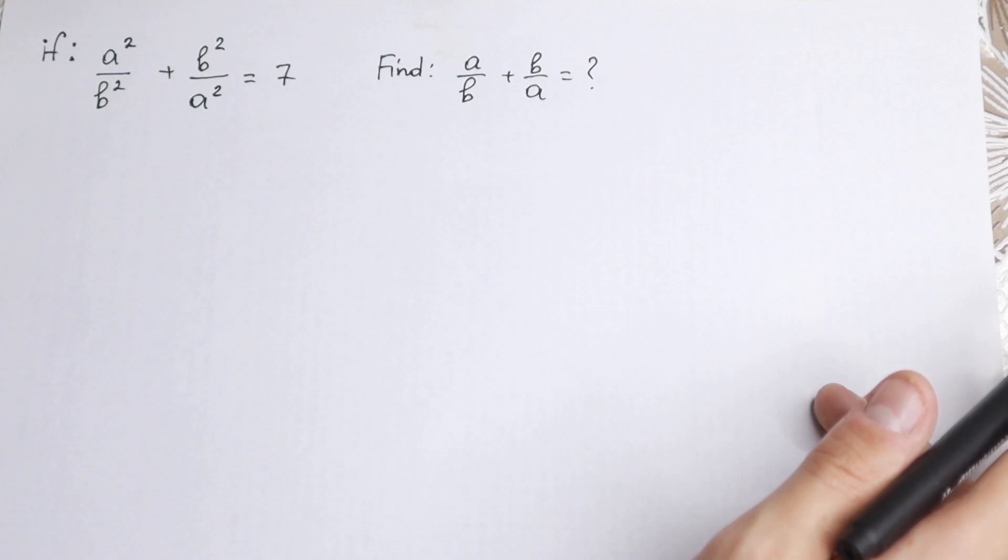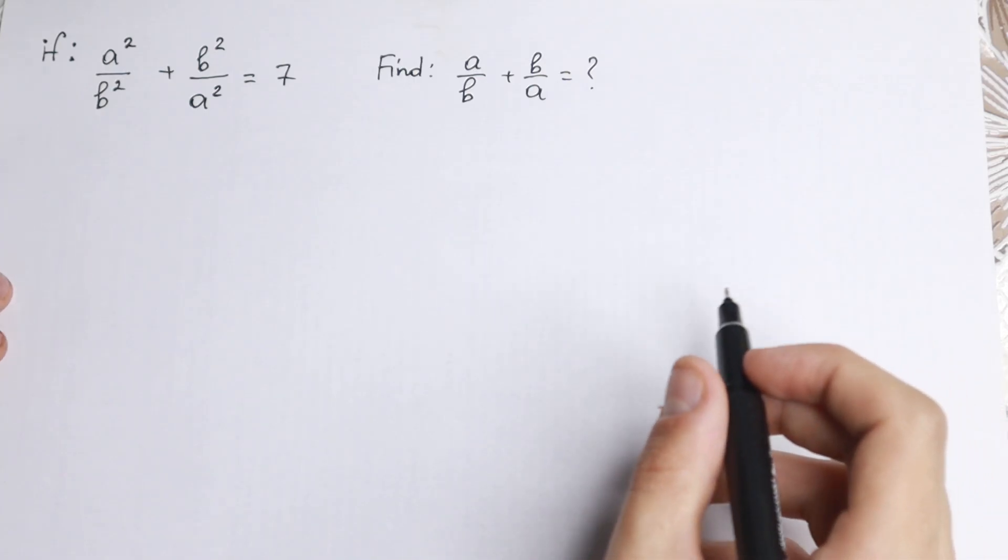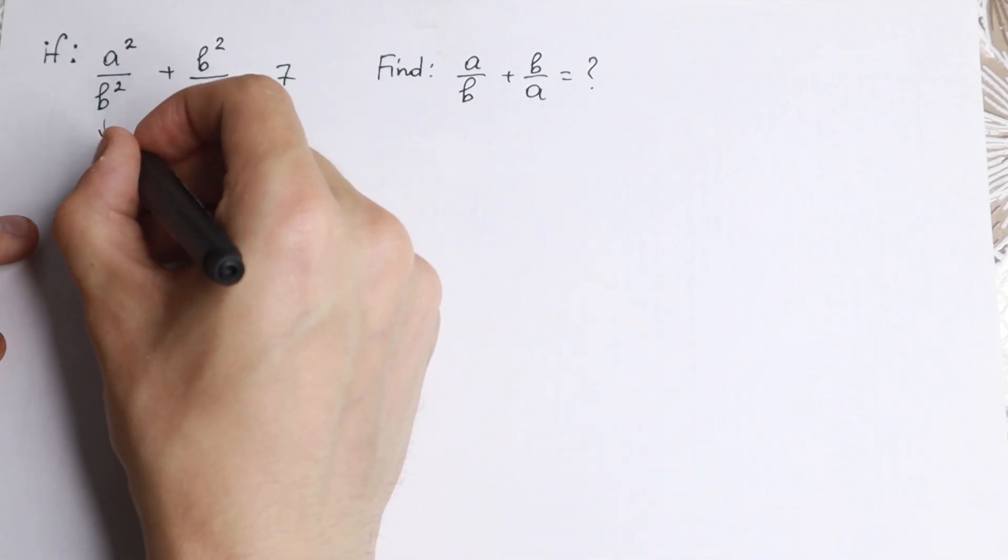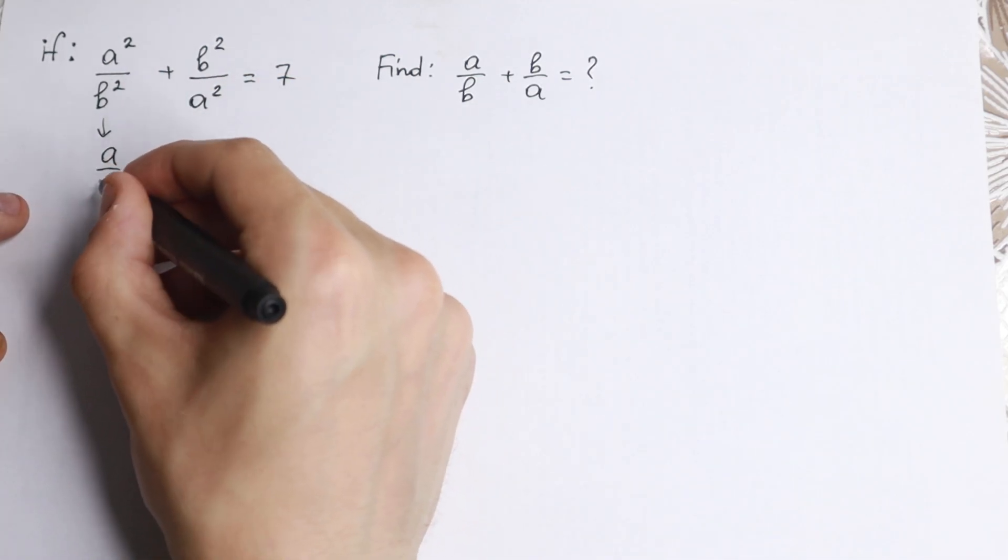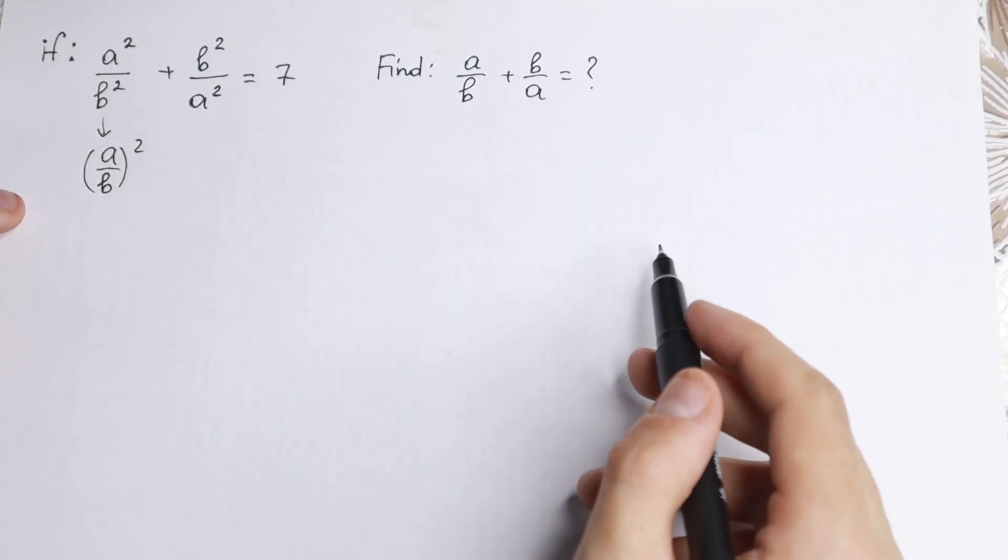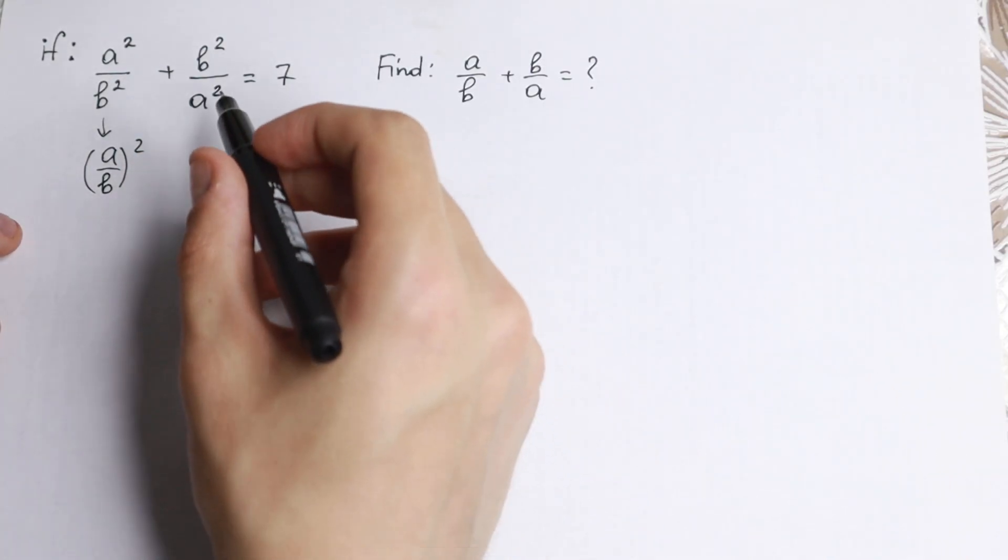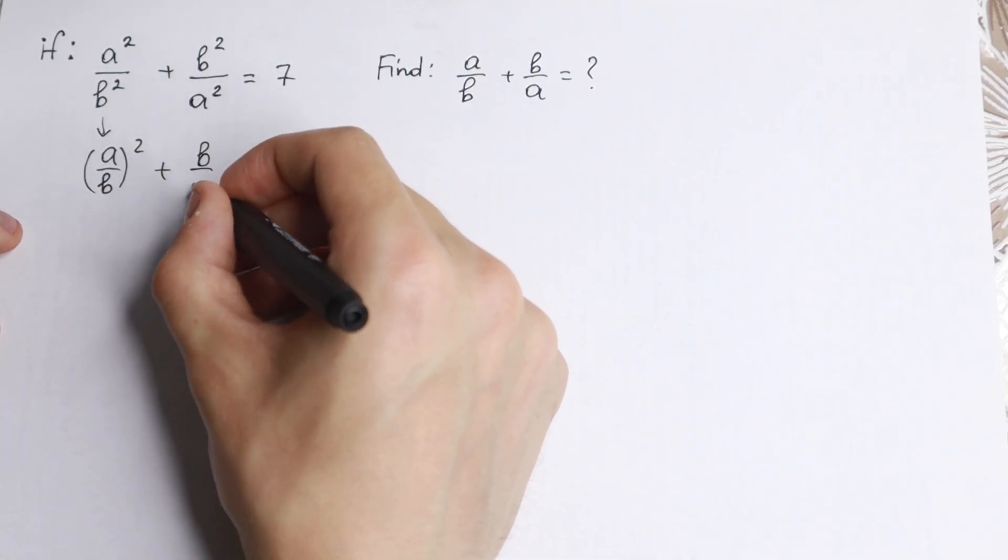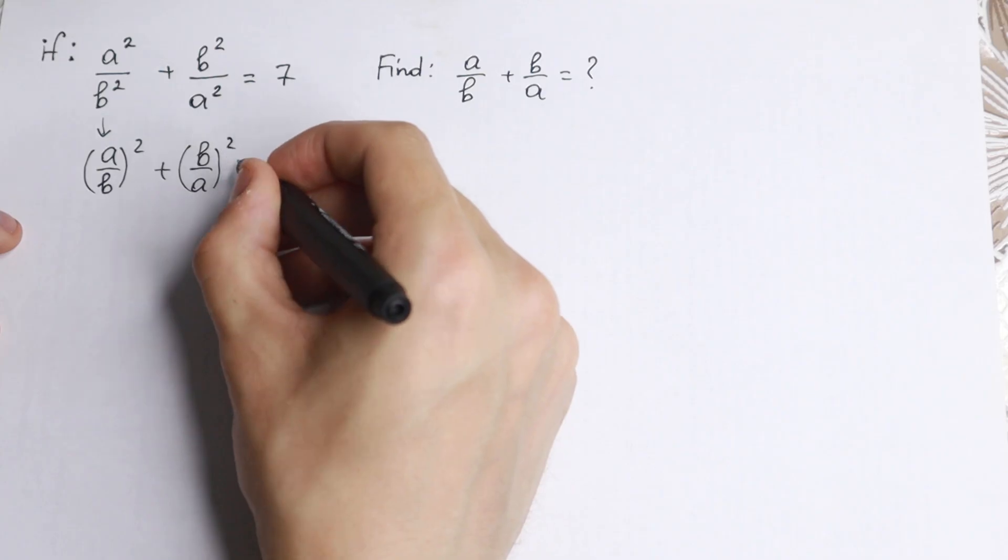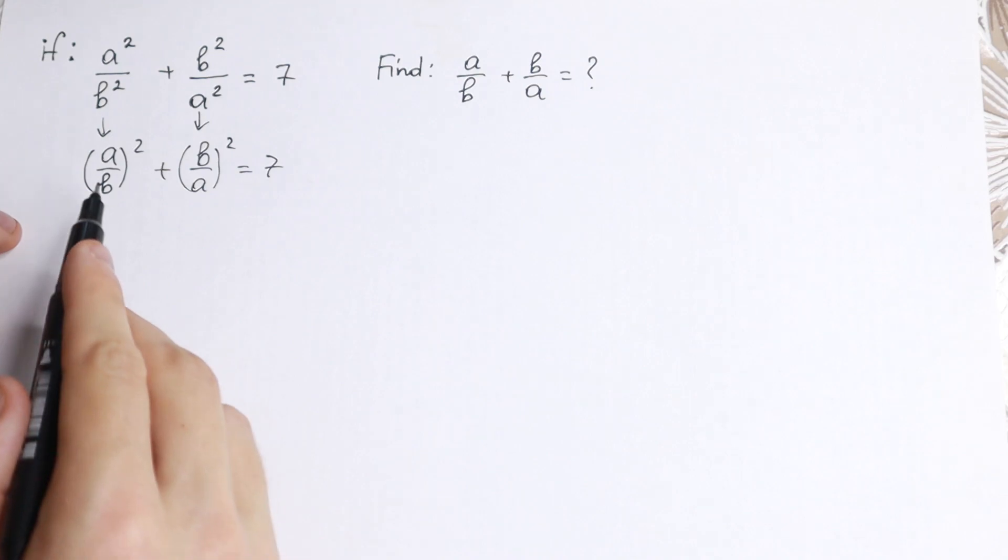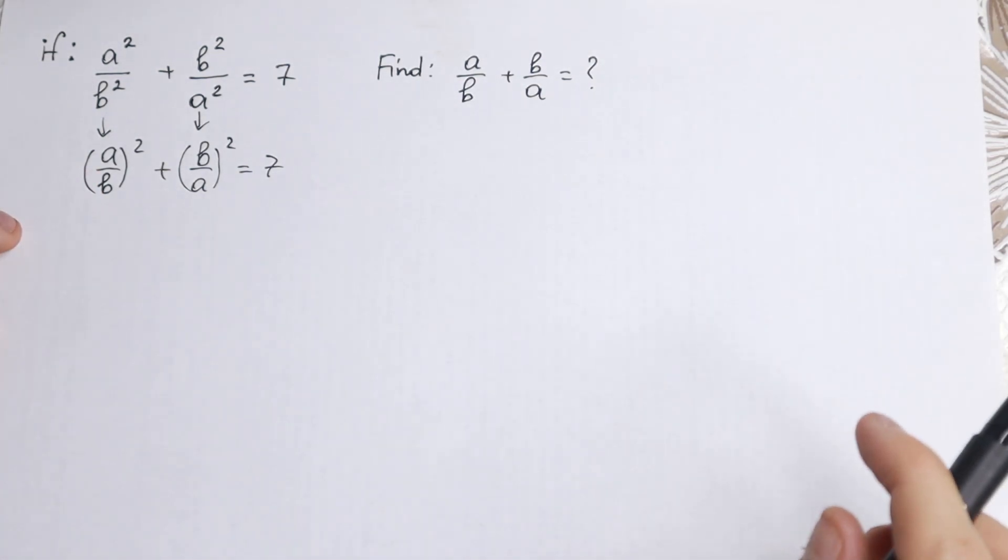Okay, let's go to solve it. We have a over b to the square power. We can easily write this element as (a over b) squared because if you write this, we will have the same as in the beginning. Let's do the same trick with this one, so plus (b over a) to the second power equal to 7. We just write it in another way. Nothing changed.